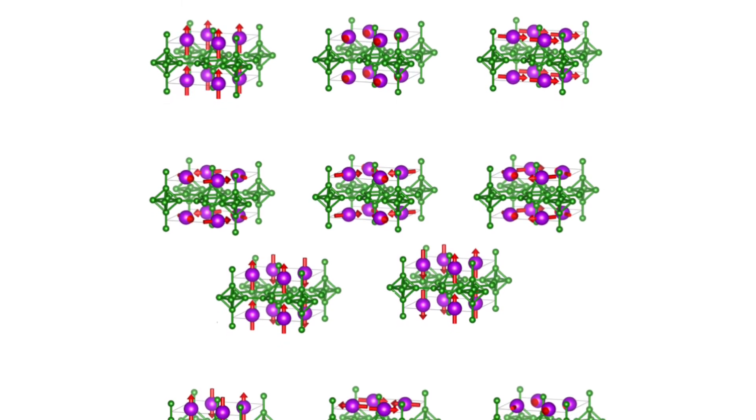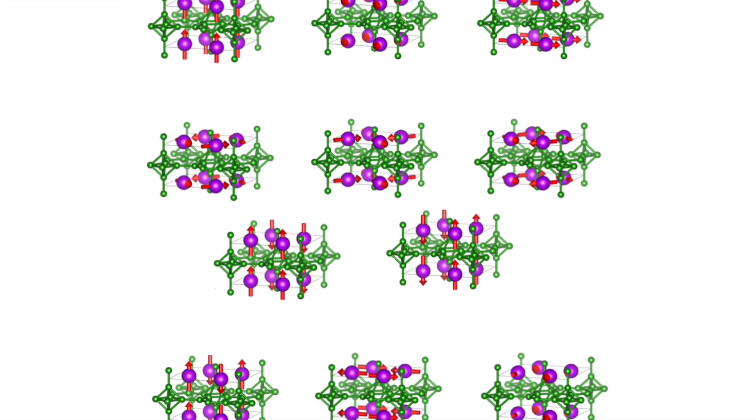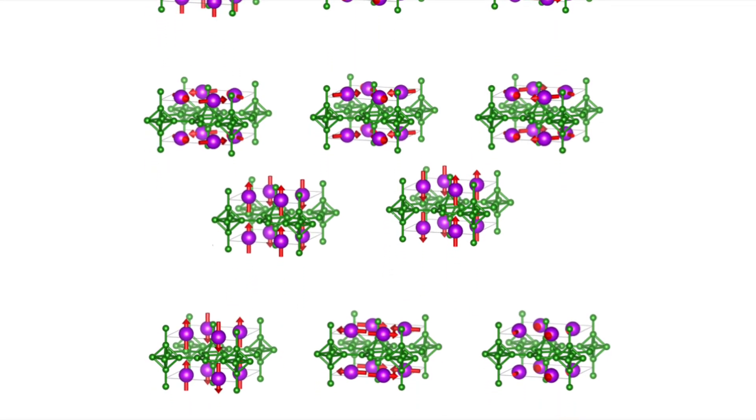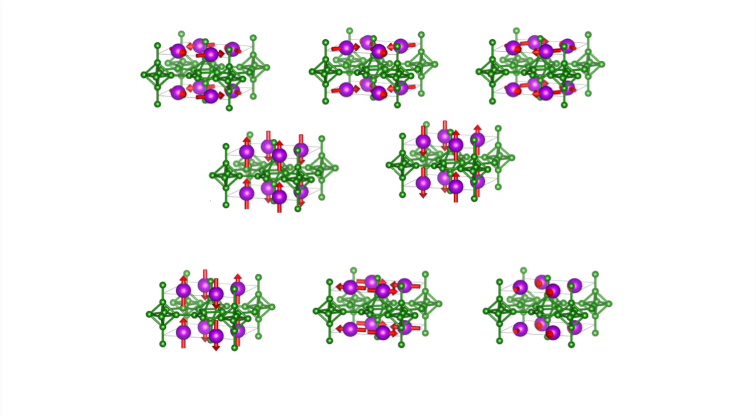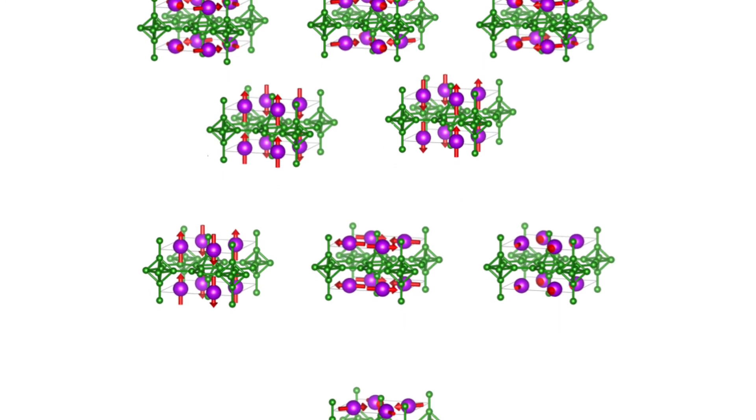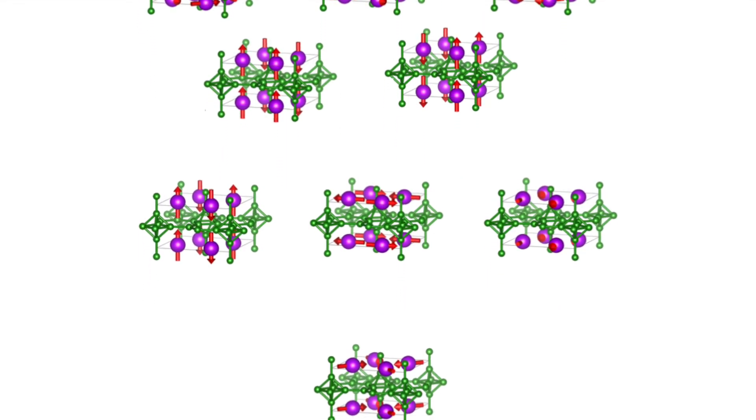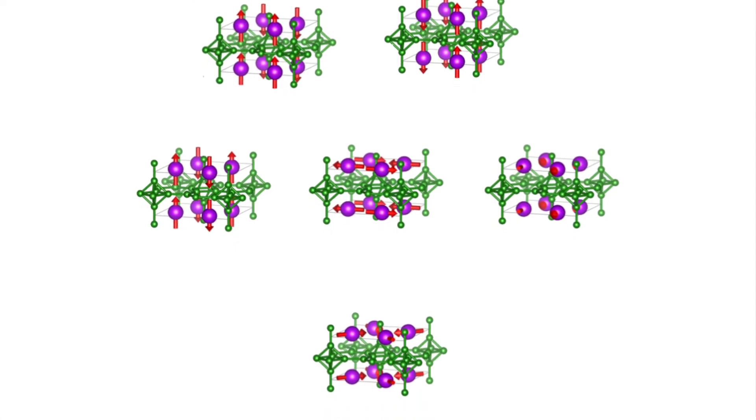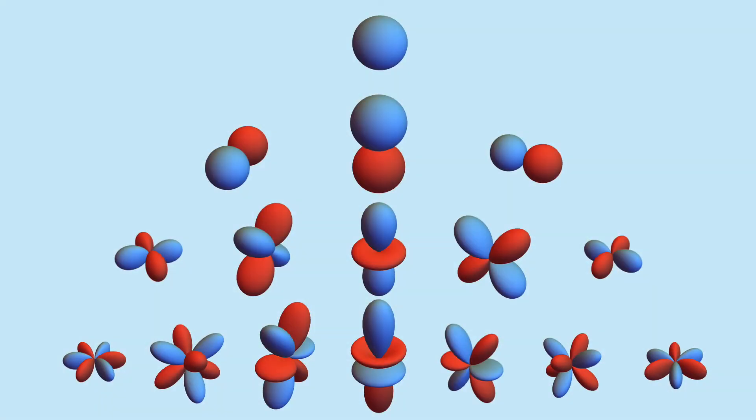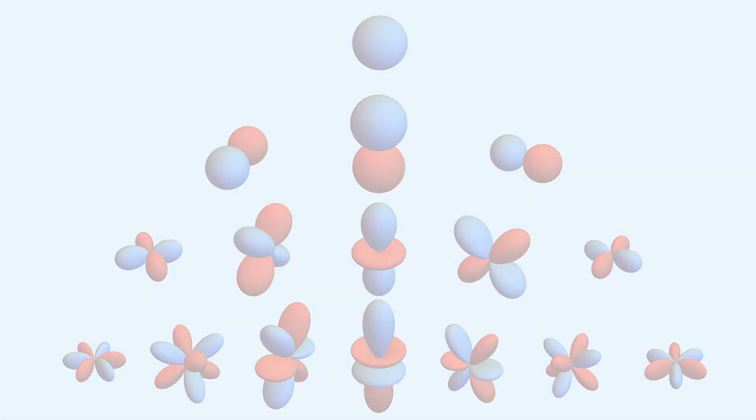To tackle this issue, we took a new approach. We create a list of magnetic structures based on combinations of special functions defined on a sphere, but adapted to the symmetry of the material. This is an analogy to how atomic orbitals are constructed.